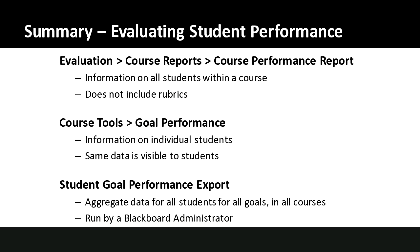So there are three different ways to look at the data from aligning the course and grading students. One is the Course Performance Report, which shows all students within that course. The Goal Performance Dashboard shows information for individual students and their particular achievement — this data can be made visible to students. The third is the Goal Performance Export, which aggregates data for all students for all goals in all courses and must be run by a Blackboard administrator. It's a fairly easy thing to do, so we're happy to do that upon request.